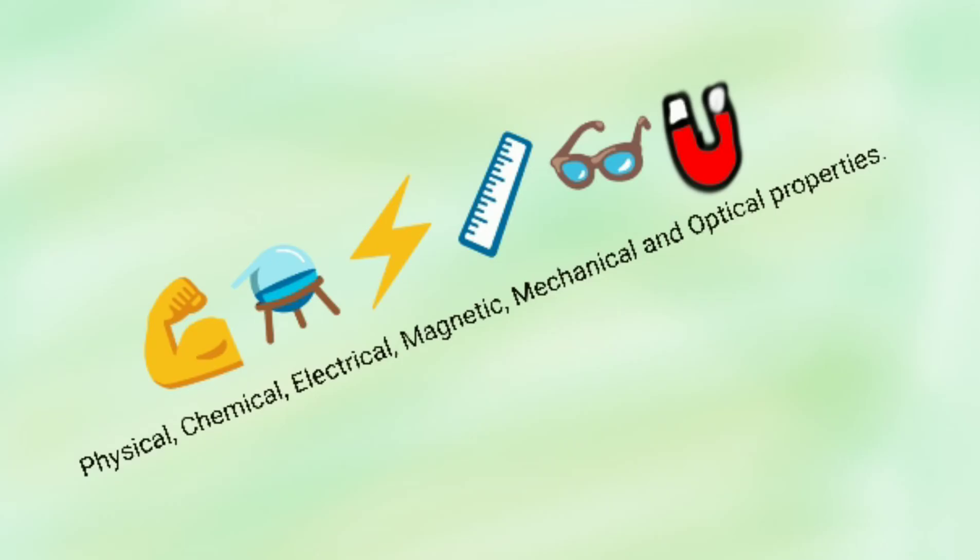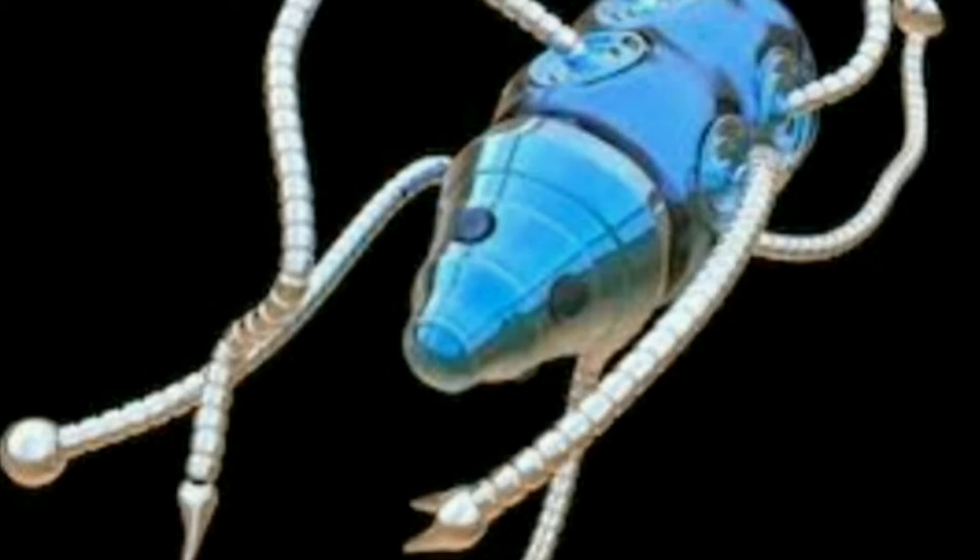With nano neural implants, because of their nano size, they possess unique physical, chemical, electrical, magnetic, mechanical, and optical properties. You can tap these properties to help these nanobots navigate, transmit, conduct, etc., with increased efficiency.